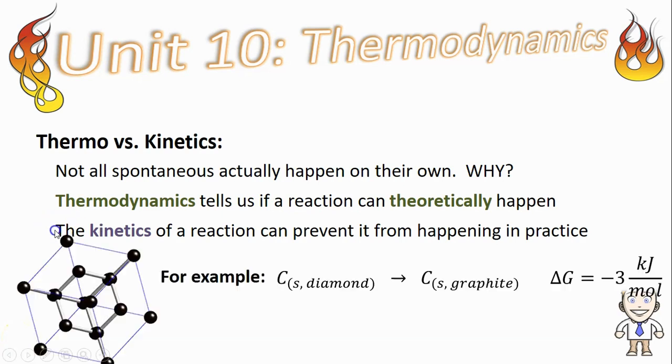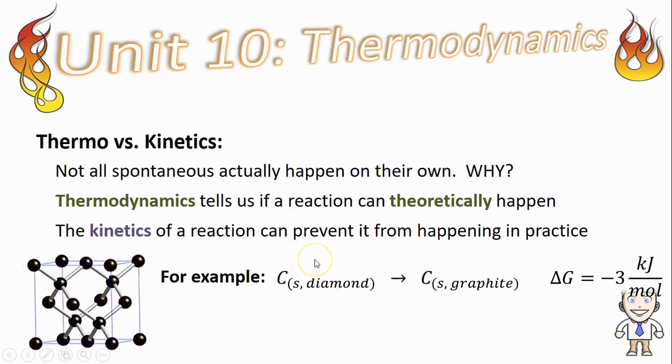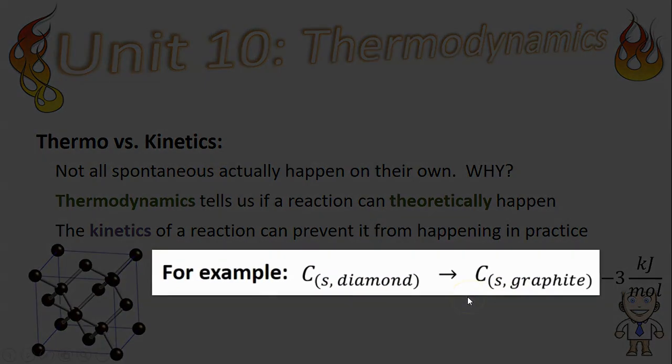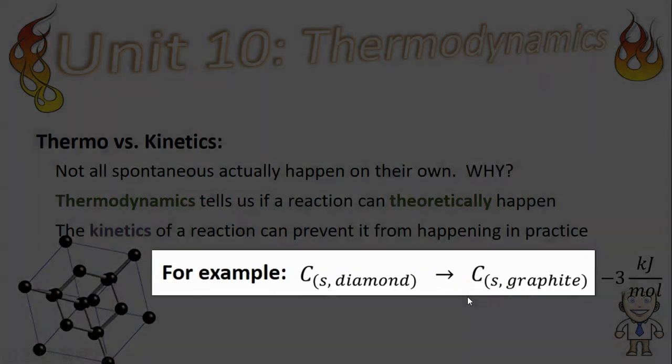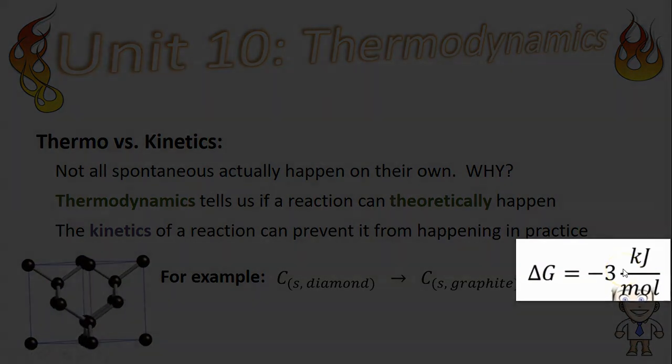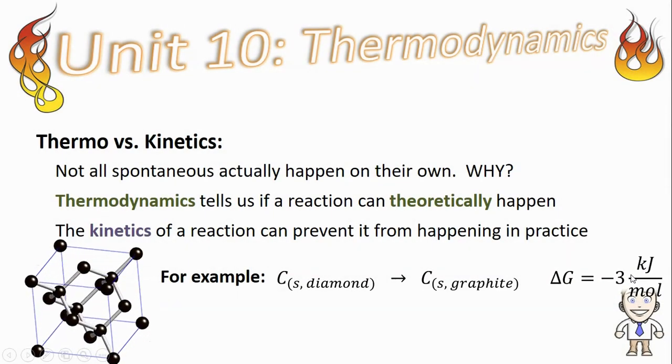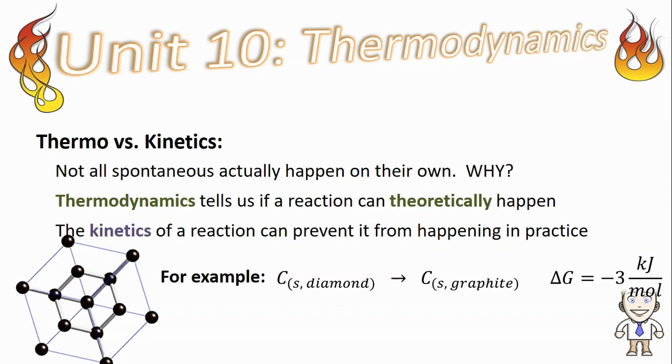To understand this more fully, let's take a look at an example. This reaction shows the conversion of carbon in the form of diamond into carbon in the form of graphite. This process has a delta G value of negative 3, meaning it releases free energy, meaning it should be spontaneous, and yet we know that this is a process that definitely does not happen on its own.